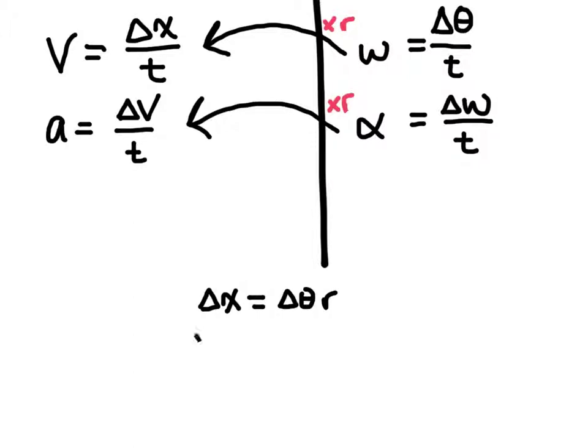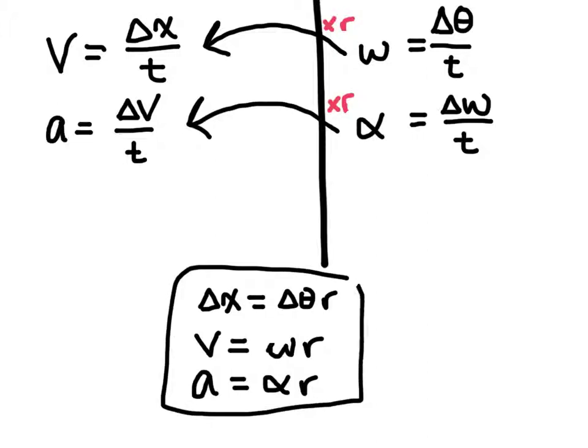And then for velocity, velocity is going to be equal to our angular component, which is omega, that means angular velocity, times the radius. And then tangential acceleration will be equal to alpha, which is angular acceleration, times the radius. And so that's how you convert from one to the other.